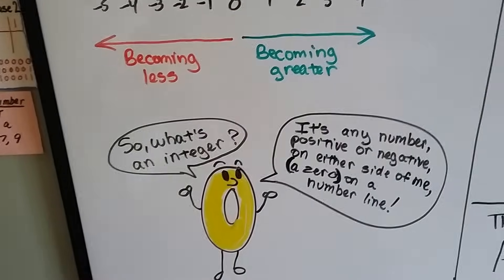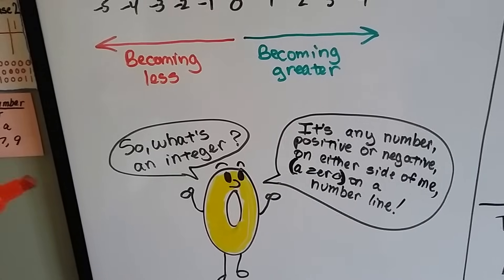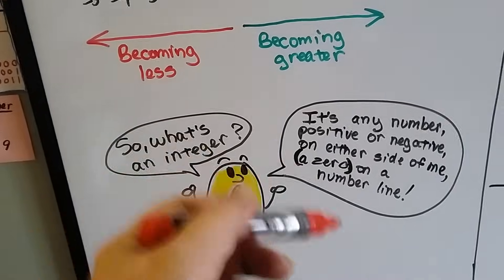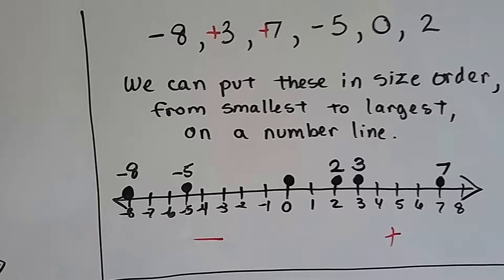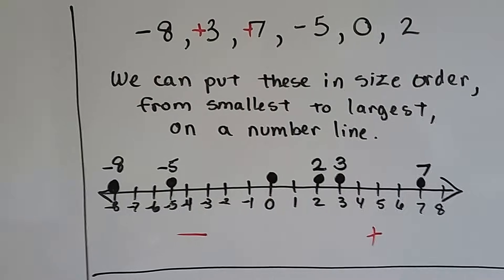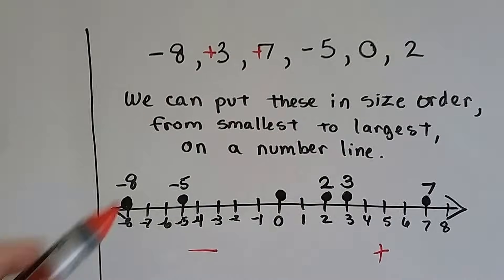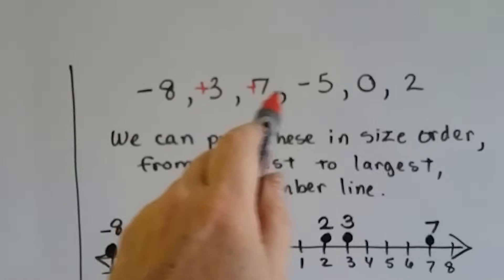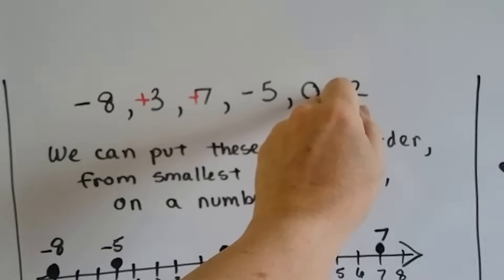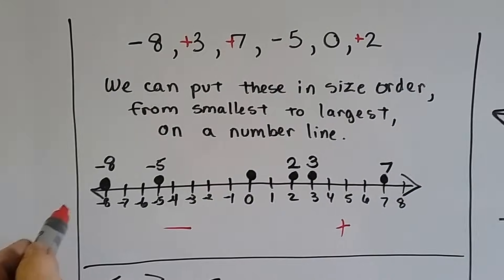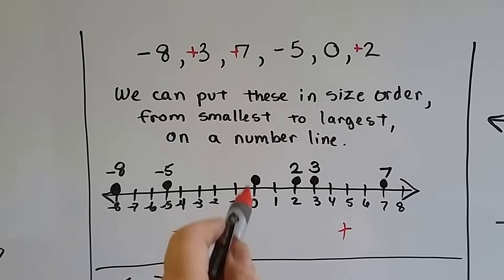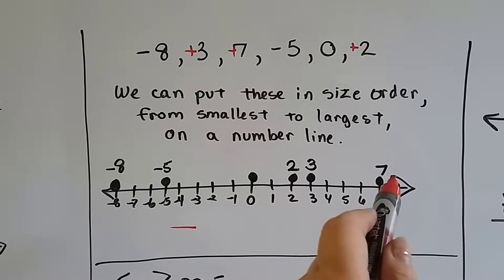So what's an integer? It's any number, positive or negative, on either side of the zero on the number line, and they're opposites of each other. We can put numbers in size order from smallest to largest on a number line because the positive ones have a little invisible positive sign in front of them, and the negative ones are on the left side of the zero. So here's negative eight and negative five. Here's our zero. Here's two, three, and seven.